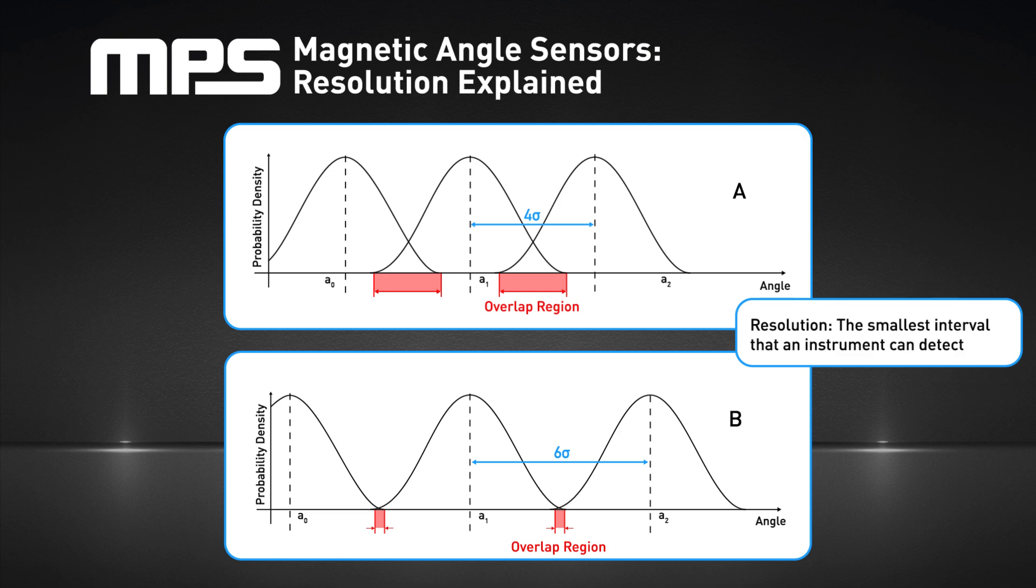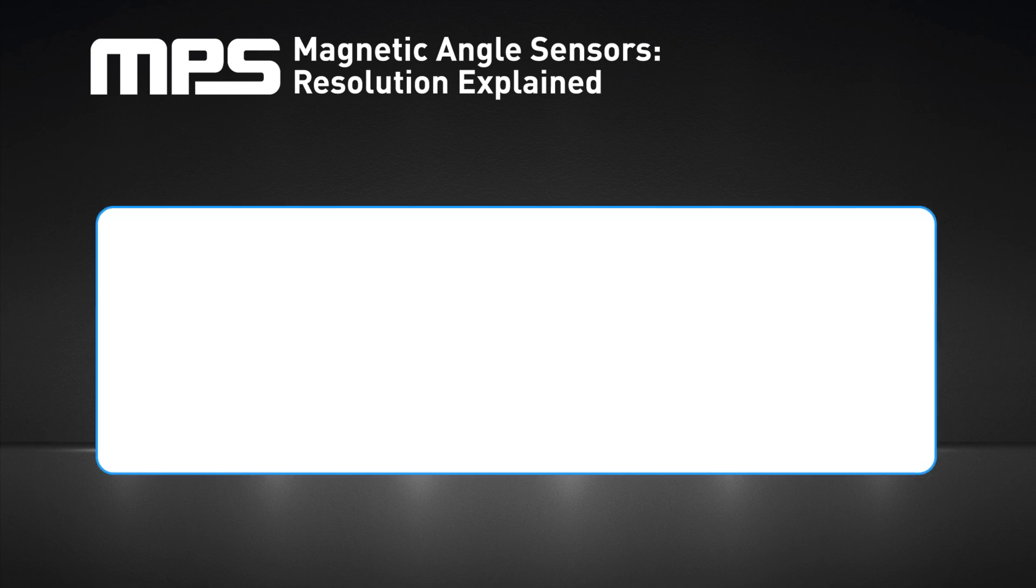It is only when the distance between the two angles is equal to or larger than six standard deviations that a single measurement can distinguish between these two points with a confidence equal to or greater than 99.73%. Therefore, the sensor's resolution is an interval of six standard deviations.